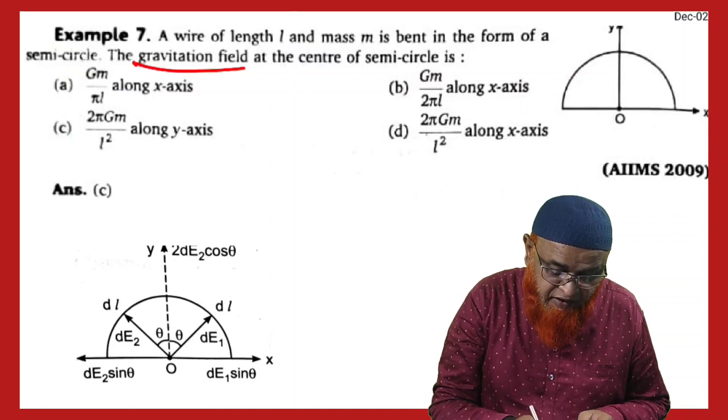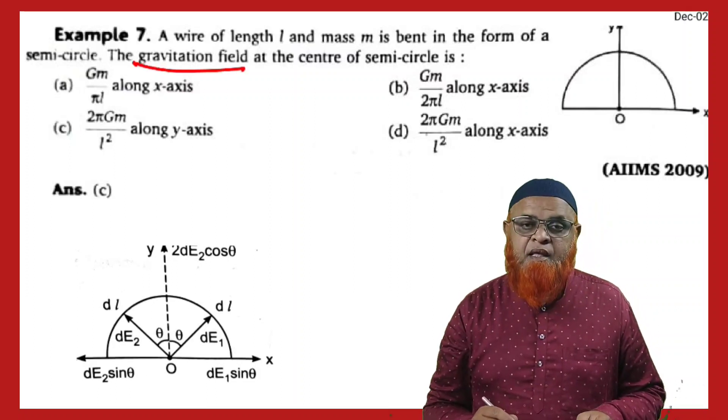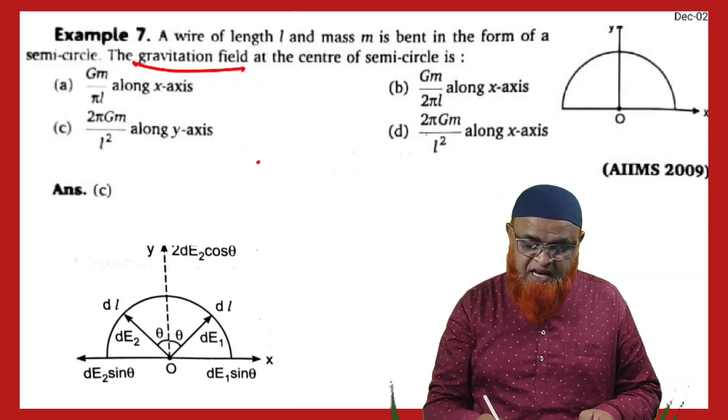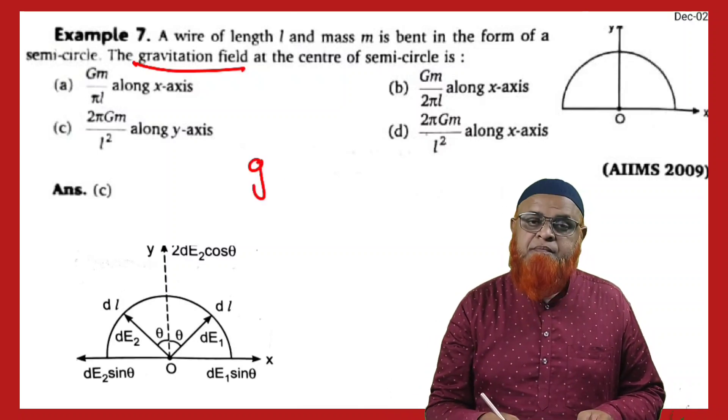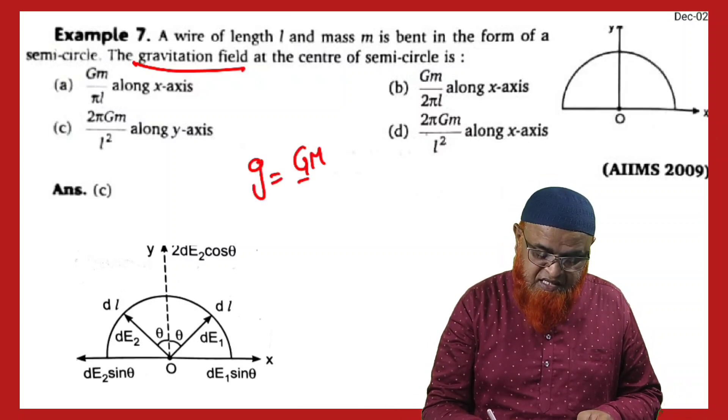He's asking us to find out the gravitational field. So how are you going to find it? You all know that gravitational field is nothing but G, and the formula for G is GM by R square.